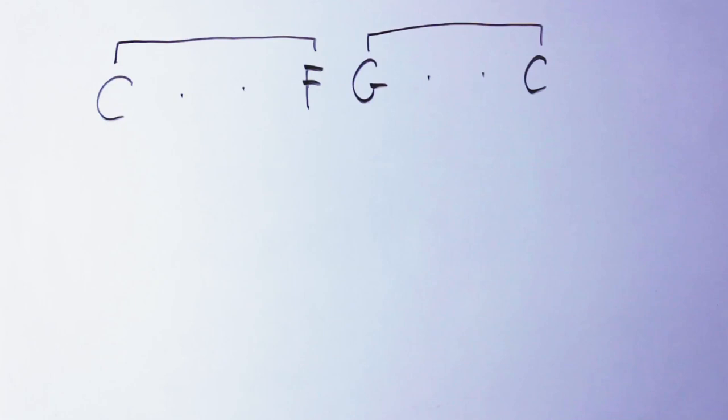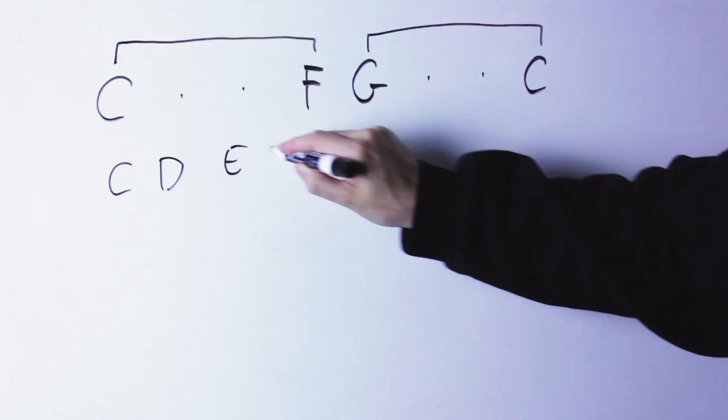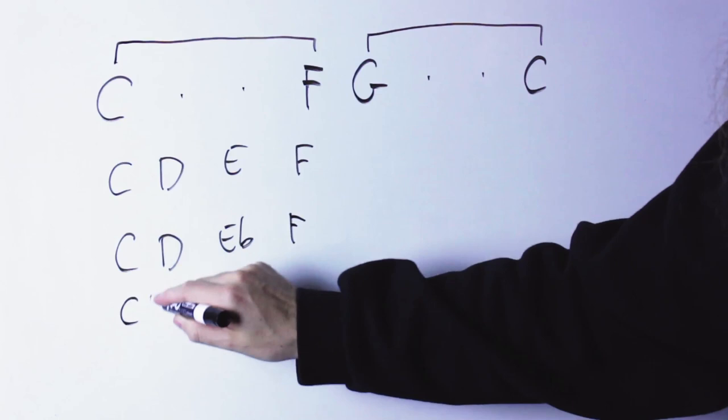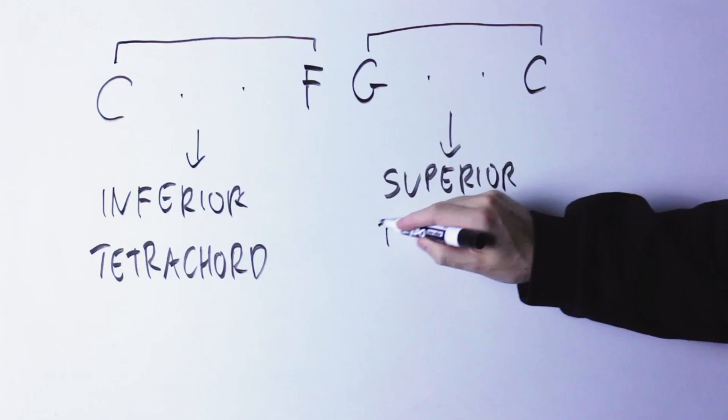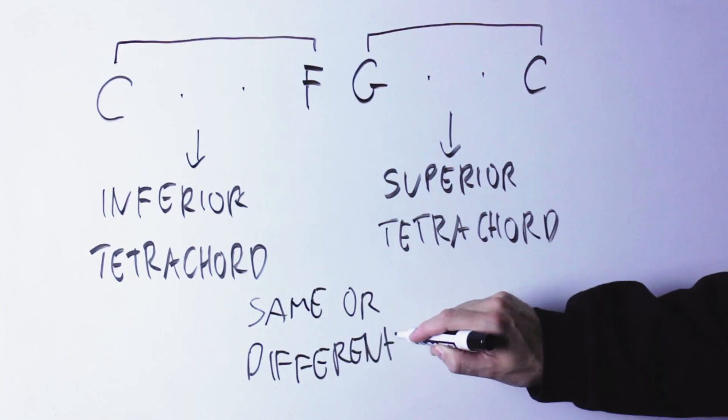Now, any four notes will work there, so C, D, E, F is a perfectly good tetrachord there, but also C, D, E flat, F is a perfectly good tetrachord, and also C, D flat, E flat, F works perfectly. The tetrachord between the first and the fourth is sometimes called the inferior tetrachord, the one between the fifth and the root is called the superior tetrachord, and the inferior and superior tetrachord may be the same or not.